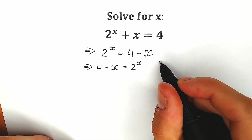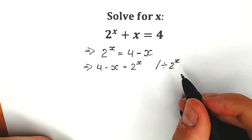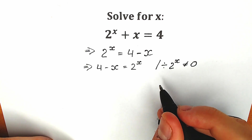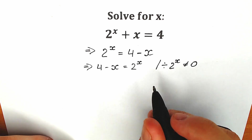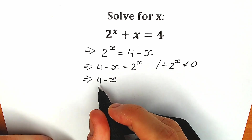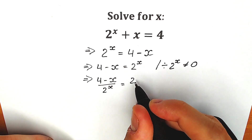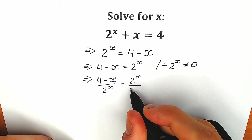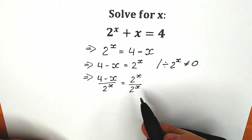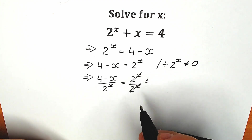The next thing we're going to do is divide both sides by 2 to the power x. Since 2 to the power x is not equal to zero, we can easily divide by it. On the left side we have 4 minus x divided by 2 to the power x. On the right side, we have 2 to the power x divided by 2 to the power x — same numerator and denominator — so we can cancel it, leaving only 1 on the right side.